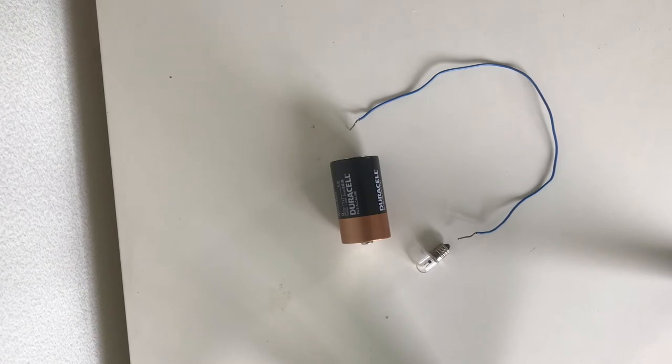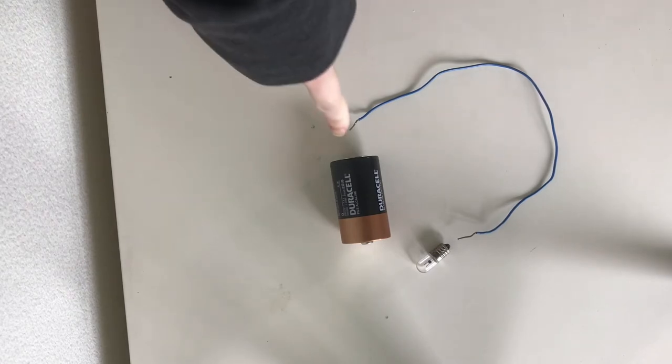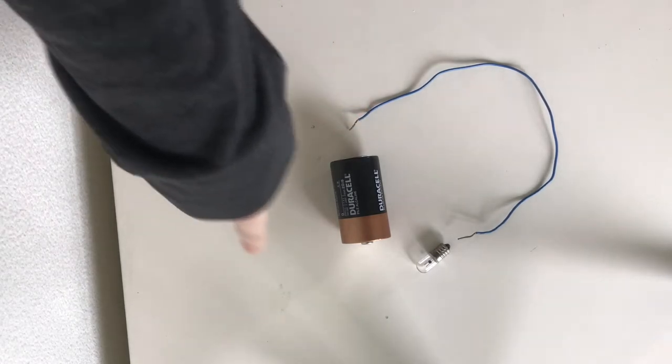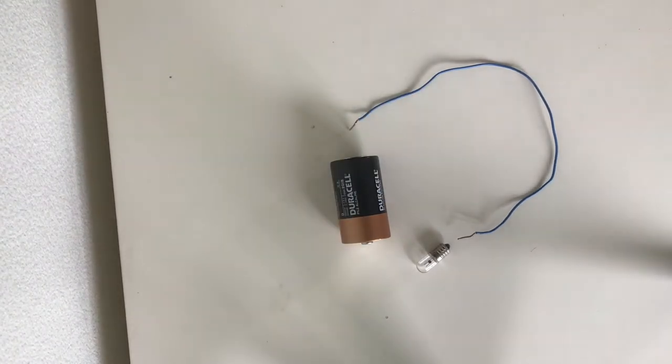So all the electricity from the negative side is going to want to flow over to the side with less electrons. So to make that flow of electrons happen, we need to create a circuit to connect the negative side of our battery to the positive side. Now the word circuit sounds a lot like the word circle. So we're basically making a circle.